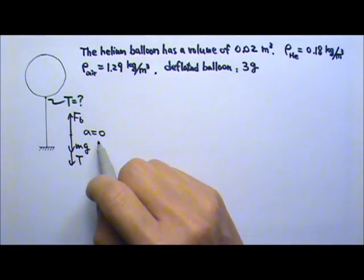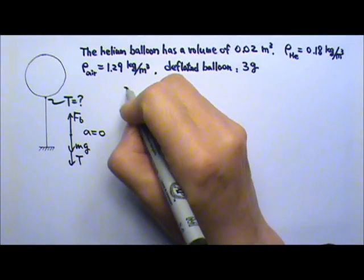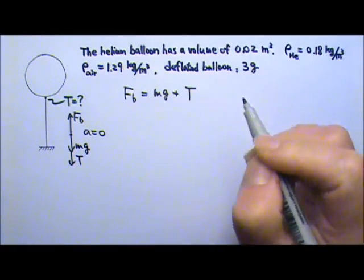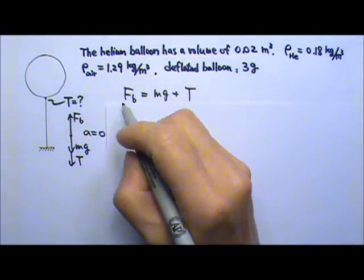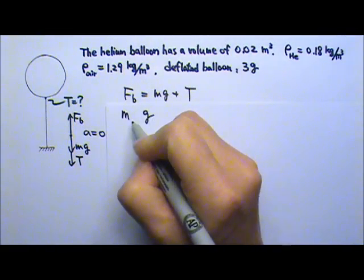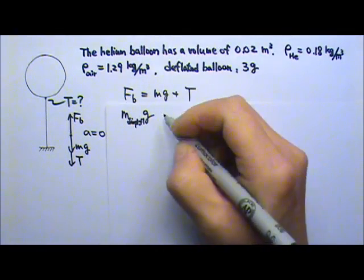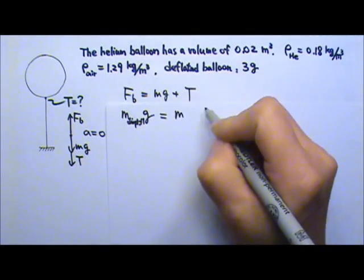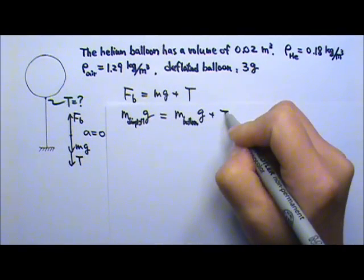Because the acceleration is 0, the upward force equals the downward forces. So the buoyant force equals the mg of the balloon plus the tension. According to Archimedes' principle, the buoyant force equals the weight of the displaced fluid, which is the mg of the displaced fluid. And that equals the mg of the balloon plus the tension.